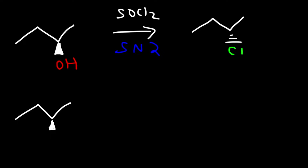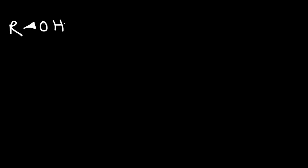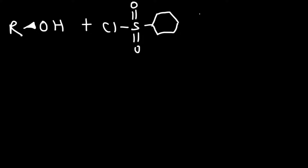Another reagent you need to know is TsCl (para-toluenesulfonyl chloride). This one works through retention — it converts the OH into a good leaving group. The product you get contains an OTs group.